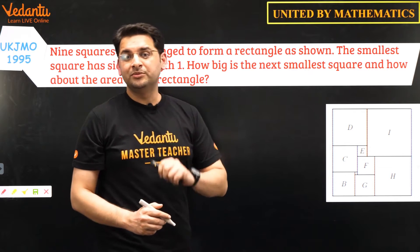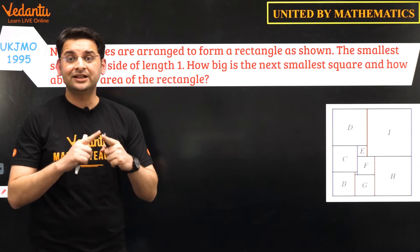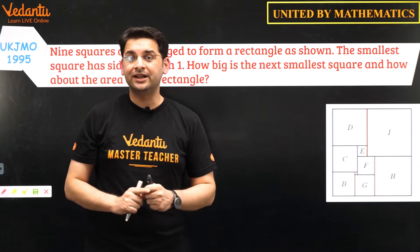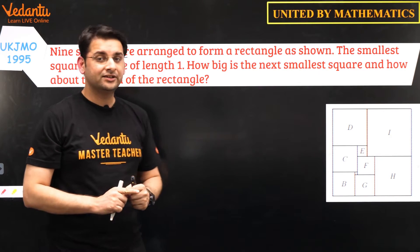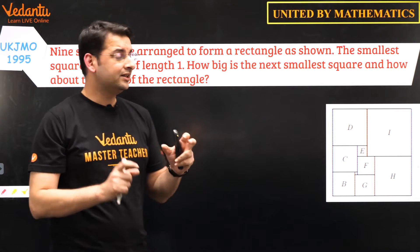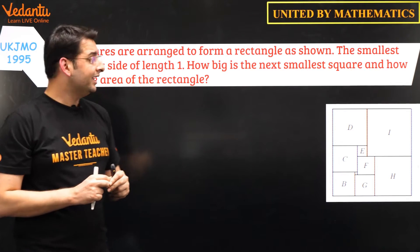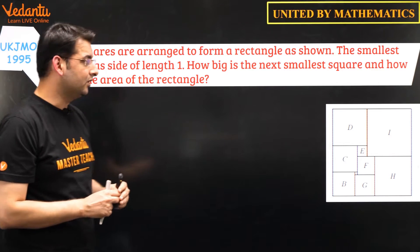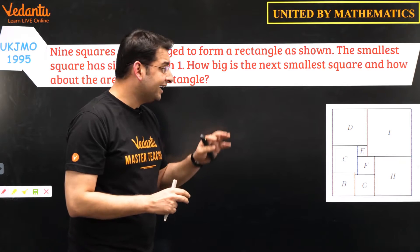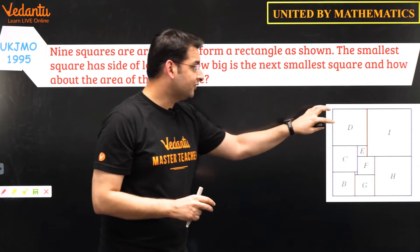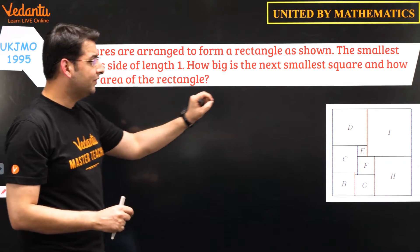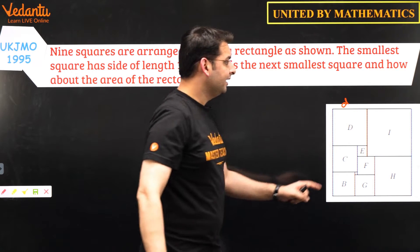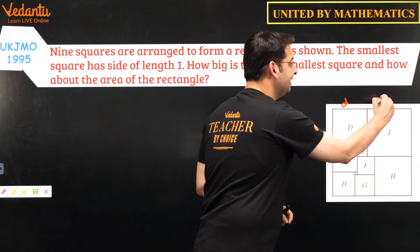There are two problems. The first one is to identify the next smallest square. The second one is to find the area of the rectangle formed by the figure. Now, I'm assuming the side lengths of these squares as small letters. So the square d has side length d, and the square i has side length i.